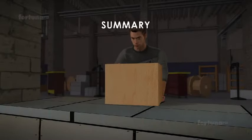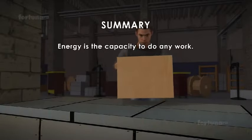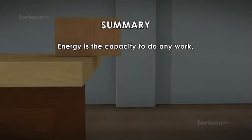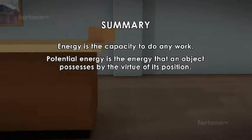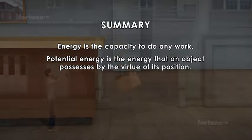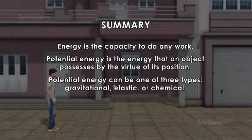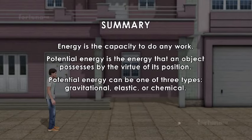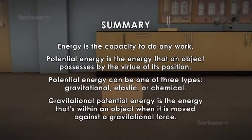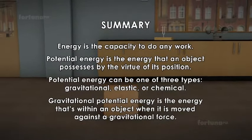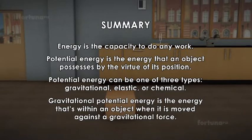Summary: Energy is the capacity to do any work. Potential energy is the energy that an object possesses by virtue of its position. Potential energy can be one of three types: Gravitational, elastic or chemical. Gravitational potential energy is the energy that's within an object when it is moved against a gravitational force.